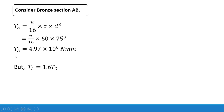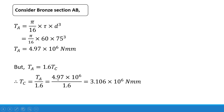Since Ta = 1.6 × Tc, we get Tc = Ta / 1.6 = 4.97 × 10⁶ / 1.6 = 3.106 × 10⁶ N·mm. So we now have the values of Ta and Tc based on the bronze section's allowable stress.